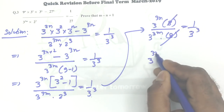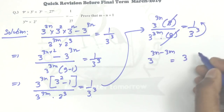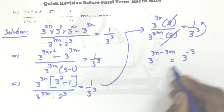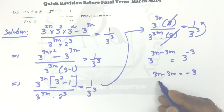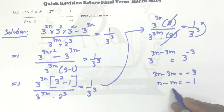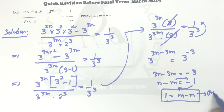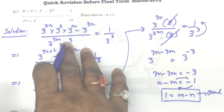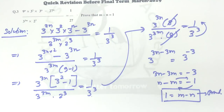After cancellation we have 3 to the power (3n minus 3m) equals 3 to the power minus 3. Since the bases are the same, we can equate the powers: 3n minus 3m equals minus 3. Dividing both sides by 3 gives n minus m equals minus 1, or equivalently m minus n equals 1, which is what was to be proved. This was an easy problem, but if you are stuck on handling exponents and powers you need this one-time practice.